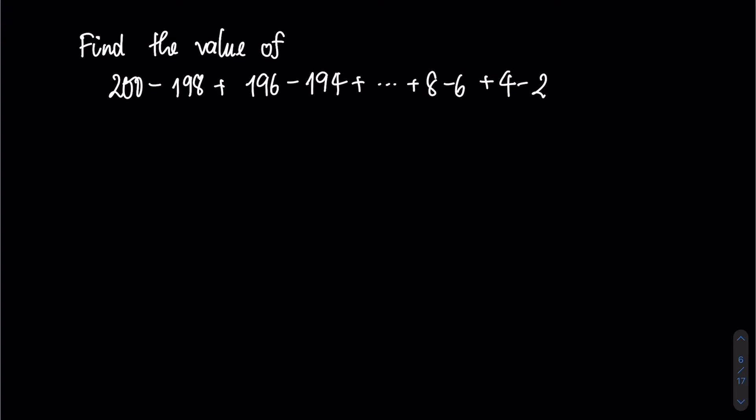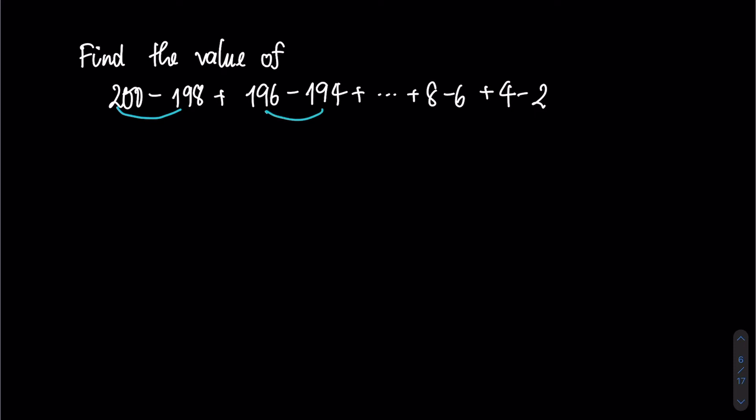As we observe, the value of 200 minus 198 equals 2, and equals 196 minus 194, all the way until 8 minus 6 and 4 minus 2.